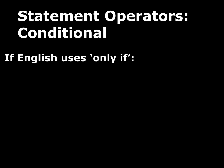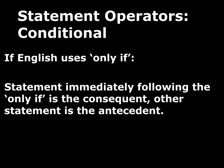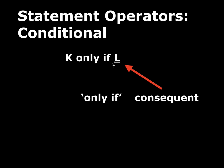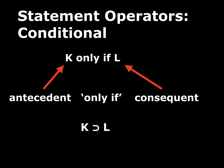What about 'only if'? If English uses 'only if,' then the statement immediately following 'only if' is the consequent, and then the other statement is the antecedent. So if I say 'K only if L' — like 'you'll pass the class only if you turn in all the homework' — we spot the 'only if,' whatever follows it is the consequent, so L is the consequent on the right. The other statement K is the antecedent on the left: K horseshoe L.